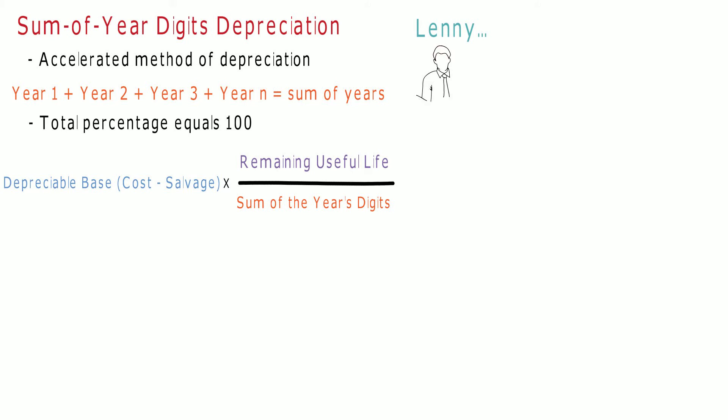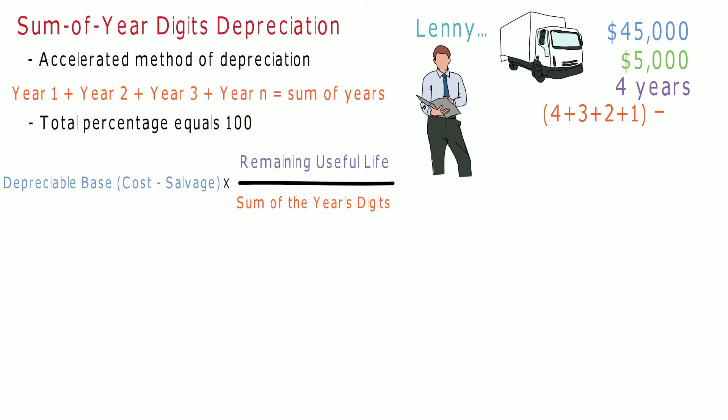In this example, Lenny purchases a delivery truck for $45,000, which he will sell for $5,000 at the end of four years. By adding the years together (4+3+2+1), Lenny's sum of year's digit is 10. This is the number he will divide by when calculating his depreciation.